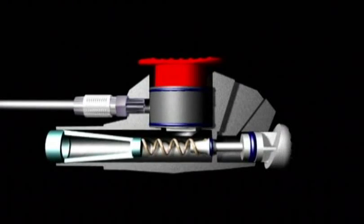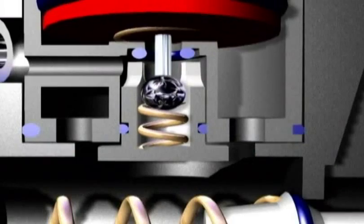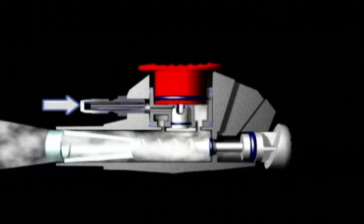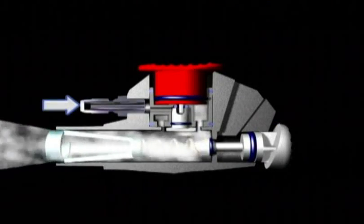By pressing the inflation button, a pin shifts the ball away from its seal against the o-ring. At this point the air is free to enter the corrugated hose, reach the jacket and inflate it.